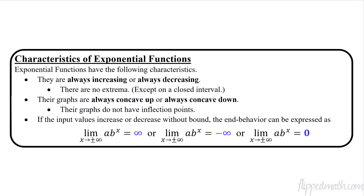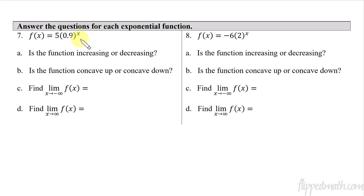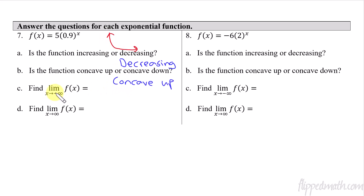For these problems, my recommendation is to draw a quick sketch. With an initial value of five and a decaying function, we have a positive a and the graph decays. From that sketch: the function is always decreasing, it is concave up, the limit as x approaches negative infinity is positive infinity (left side), and the limit as x approaches positive infinity is zero (right side).